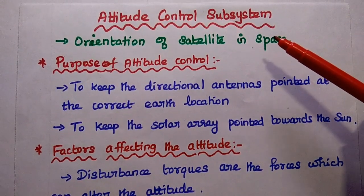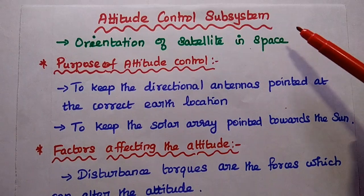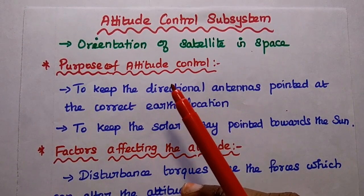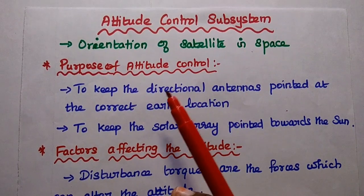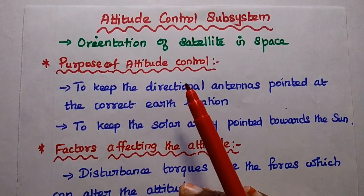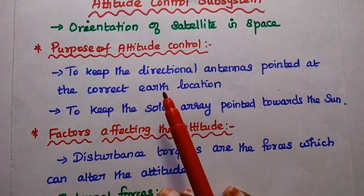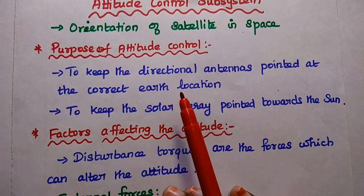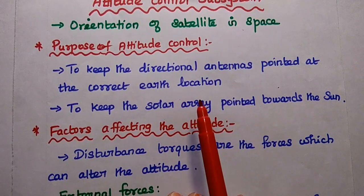Now we are going to discuss the attitude control subsystem in satellite communication. Attitude represents the orientation of a satellite in space — that is, keeping the satellite antennas in the proper direction. The attitude control subsystem is mainly used to keep the satellite antennas pointed at the correct earth location.